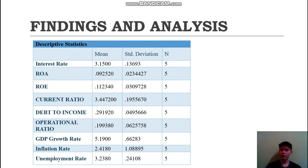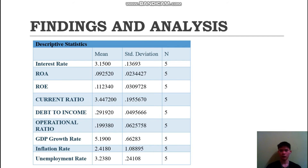For the findings and analysis, let's start with the descriptive statistics. There are three main components: mean, standard deviation, and n. The mean is the average, standard deviation is the dispersion or volatility, and n is the number of observations. The inflation rate has the highest standard deviation, which means the inflation rate is the most unpredictable variable among all variables. The n is only 5, because I have only taken 5 years of data from the company annual reports, from 2014 to 2018.